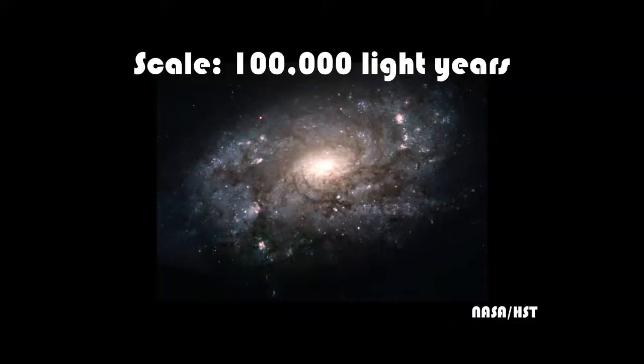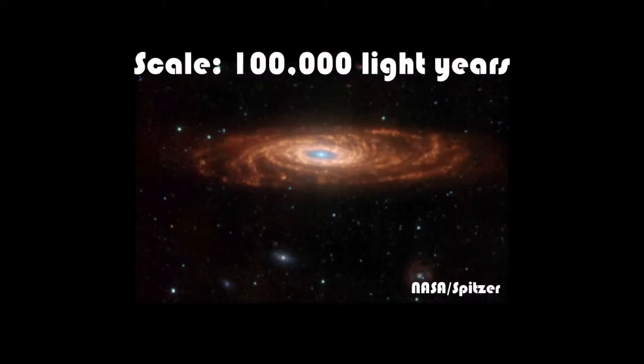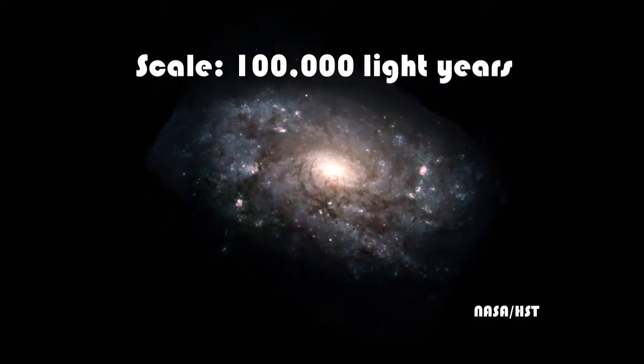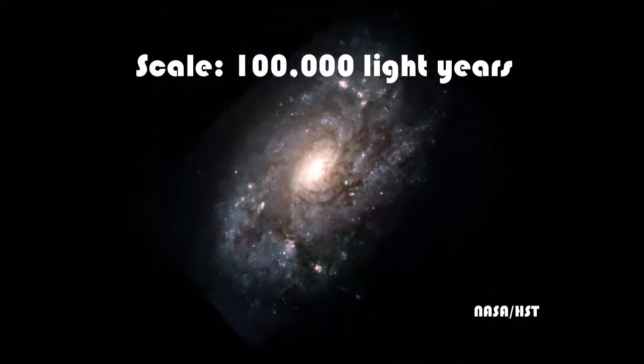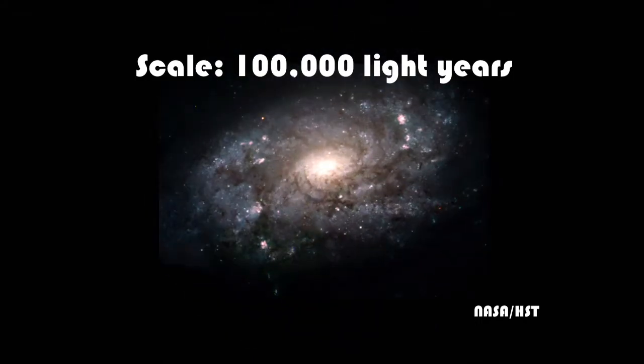We might look at not visible light, but in another form of light, like infrared light with the Spitzer Space Telescope, which gives us a picture like this one of a different galaxy. Again, a spiral galaxy hundreds of thousands of light years across. So what do we see when we see galaxies like this? We notice that many of them are spinning.